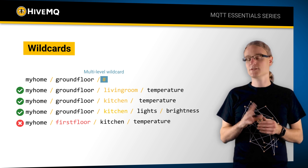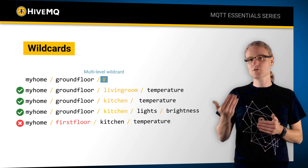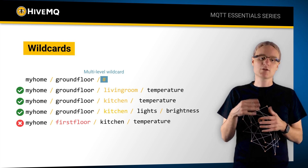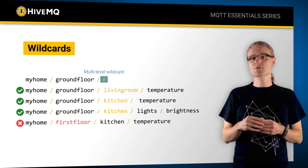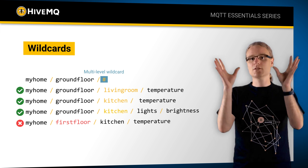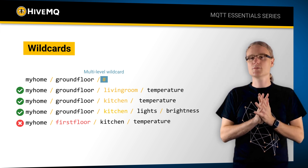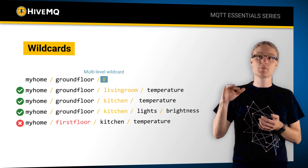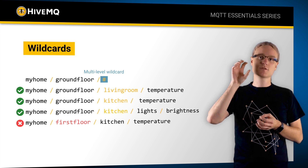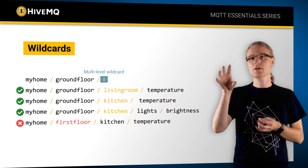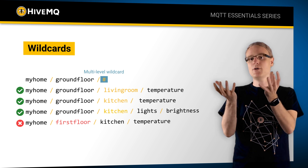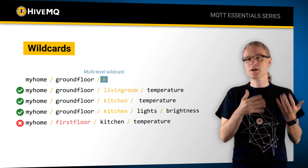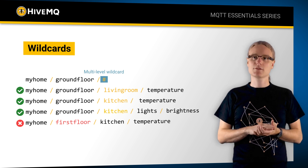These topic wildcards are extremely important. Because of them, you can have literally millions of topics while still using just a few subscriptions to get a lot of the data streams. Just because you're publishing to millions of topics doesn't mean you need to subscribe to millions of topics. If you use the wildcards in a clever way, you get every part of the data stream you want, but you can omit messages you don't want based on the topic addressing.